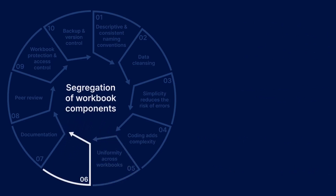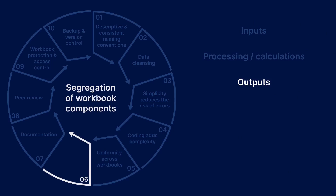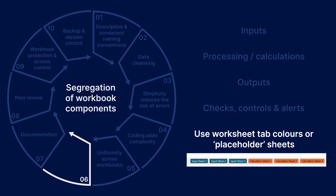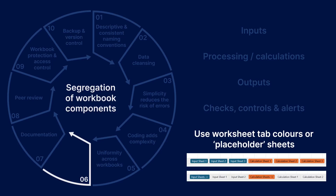Step 6 — segregation of workbook components — means you should group workbook sheets into discrete sections: input sheets such as raw data, fixed values, lookup tables and scenario assumptions; process or calculation sheets, in which you should avoid hard-coded values in formulas; output sheets such as reports; and finally, checks, controls and alerts. Put these onto one sheet if possible, or consolidate onto one review sheet if checks need to be spread throughout the workbook. Look at using sheet tab colours or placeholder sheets to differentiate the sections.